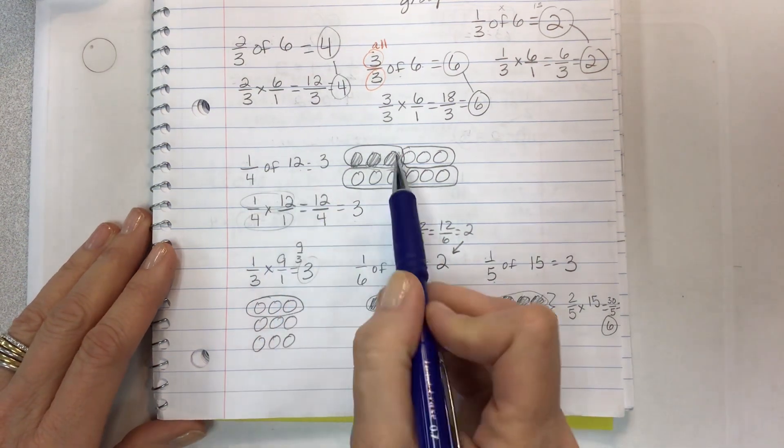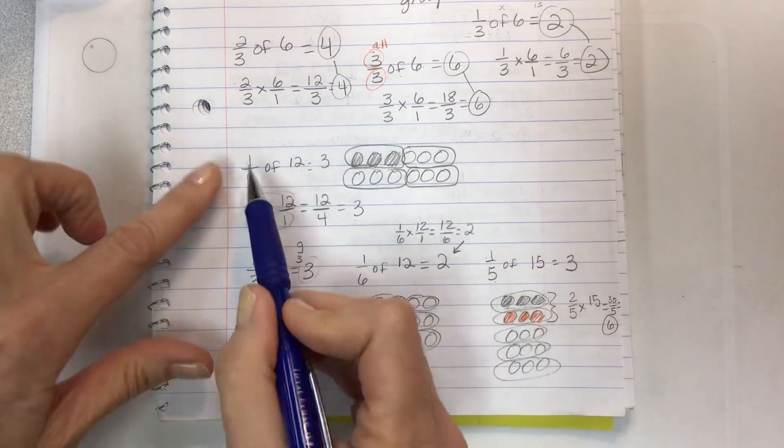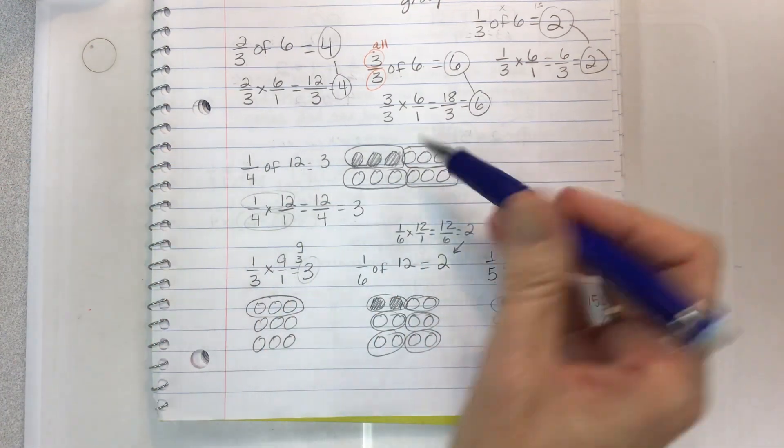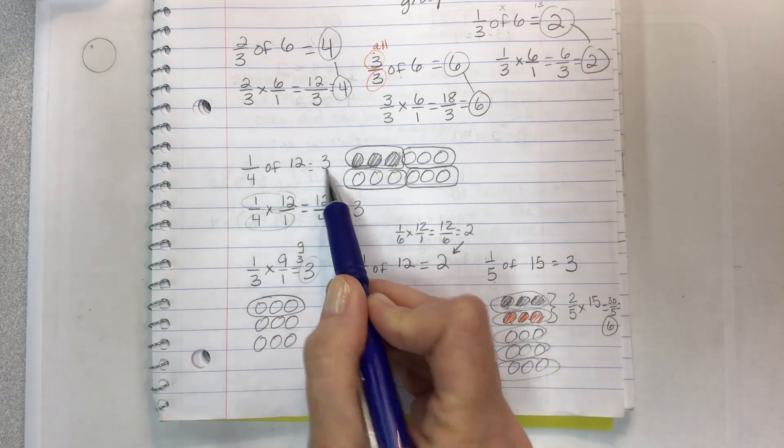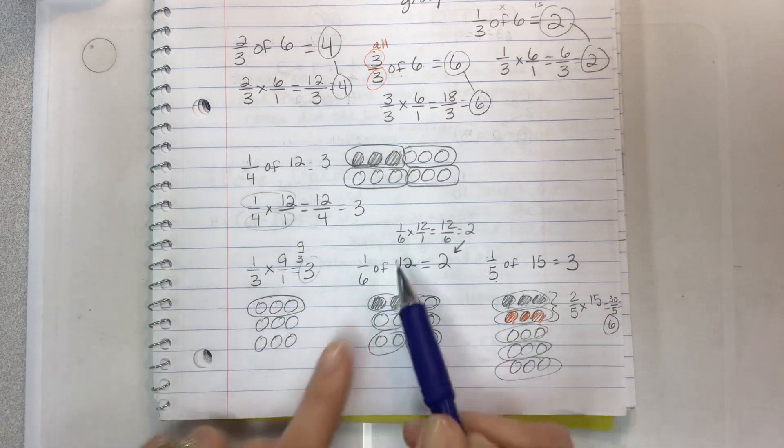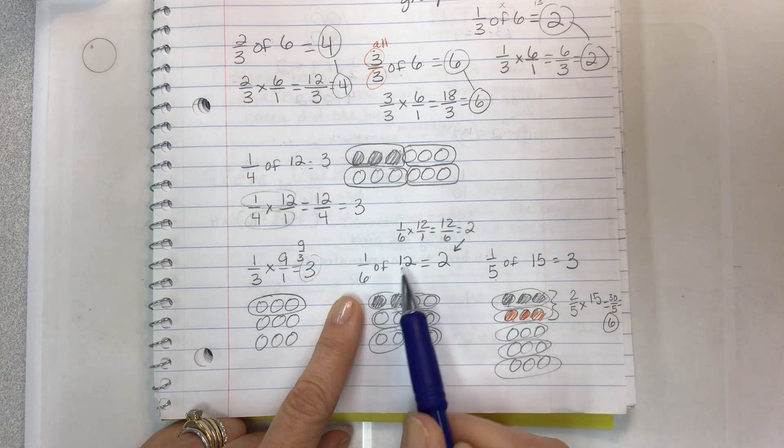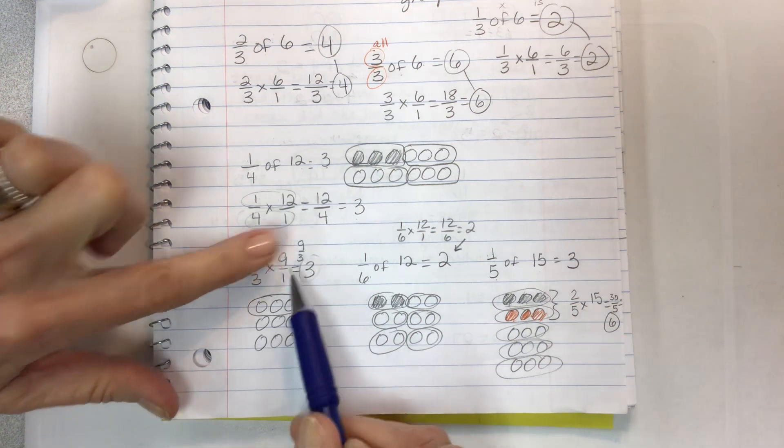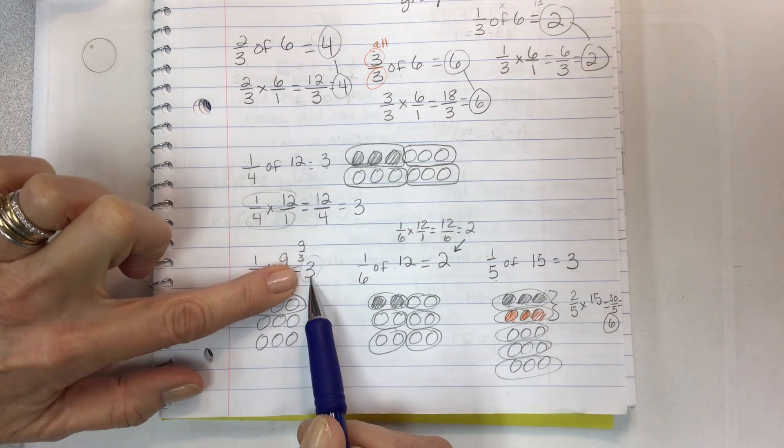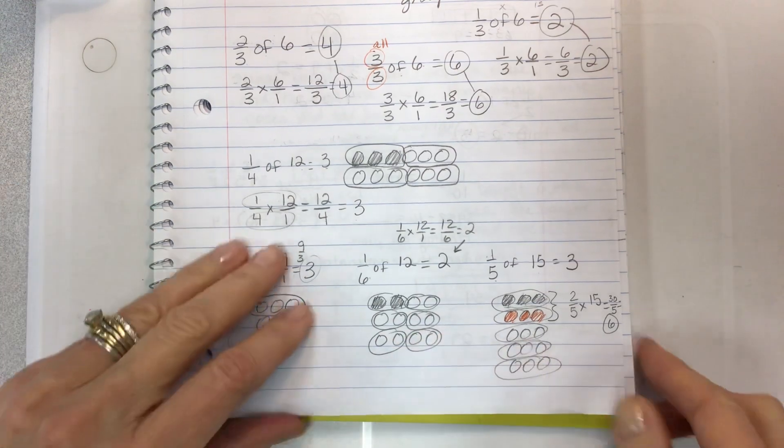Let's look at some more examples. One fourth of 12. I'm taking 12, putting it into four groups. Four groups of three. One of those has three, but then you can find out two fourths of 12 and three fourths of 12 simply by repeatedly adding this number. One third of nine, that's three. Here's another sample. One sixth of 12, that would be two.